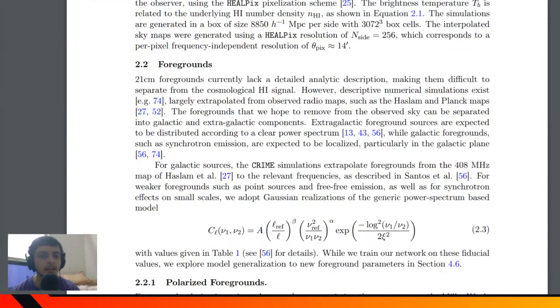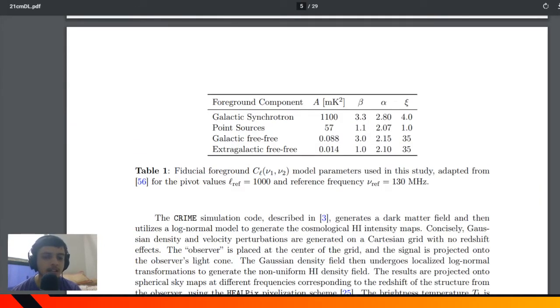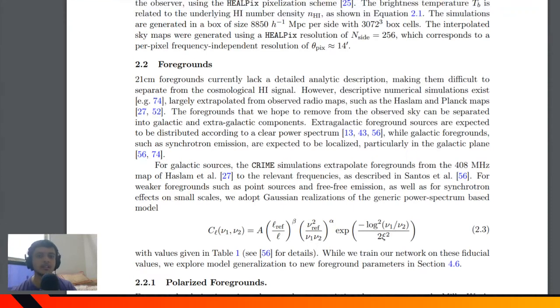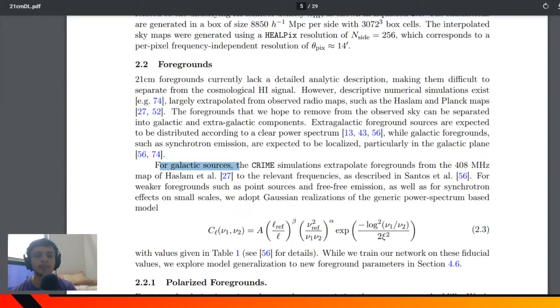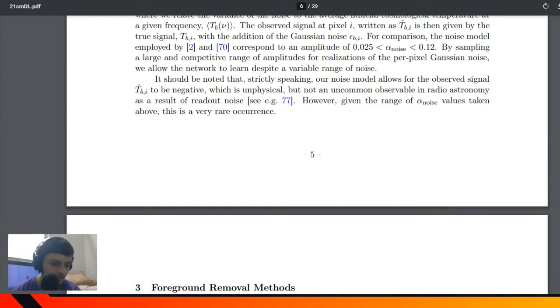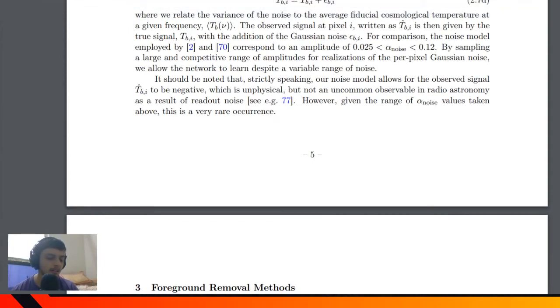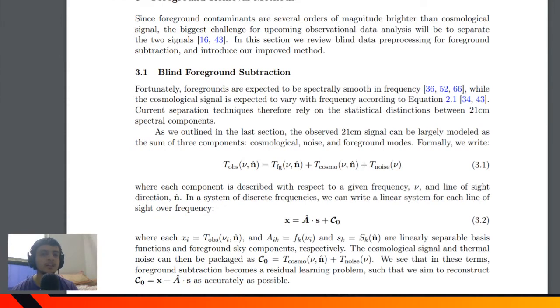This data is simulated via the CRIME simulation code, which you can find in the reference. It has been well established for sources and helps extrapolate foregrounds from 408 megahertz using power spectrum equations. I'll talk about how they're trying to fine-tune this neural network model to recover cosmological signals from the PCA residuals.